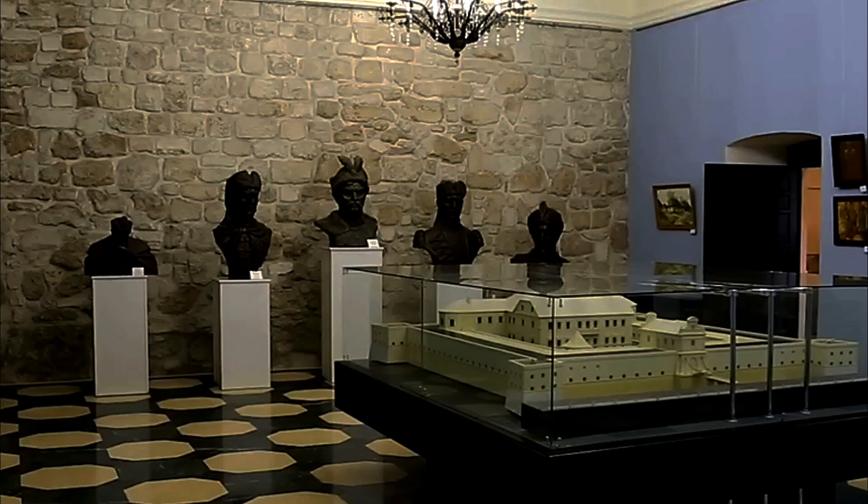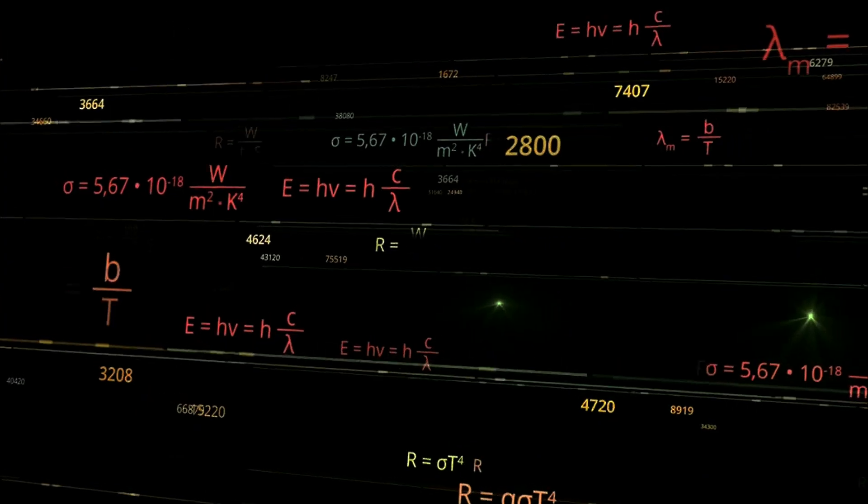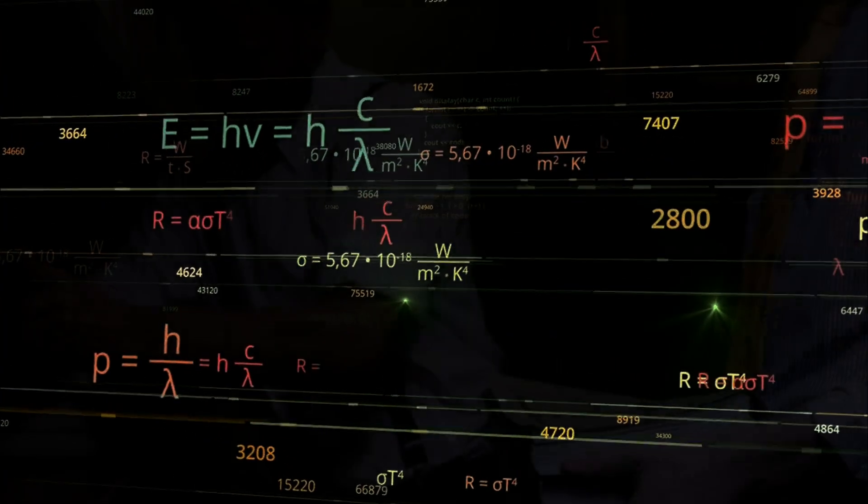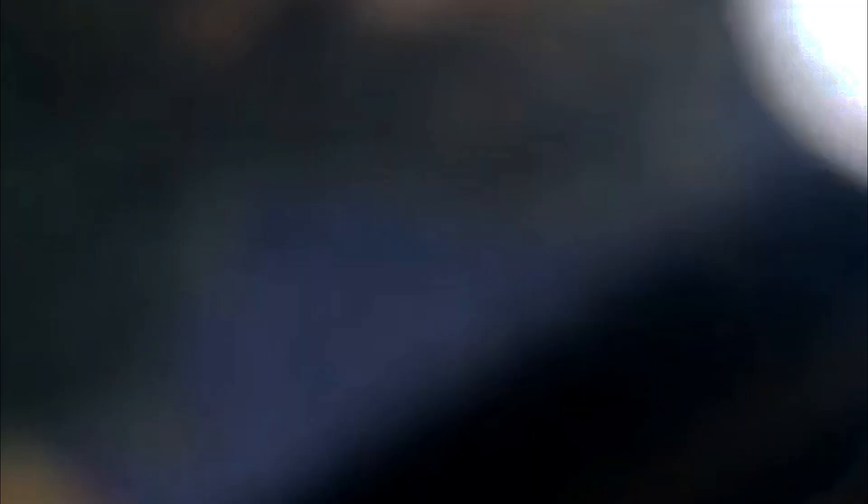Scholars like Ibn al-Haytham made significant contributions during this period. Ibn al-Haytham revolutionized our understanding of light. Al-Biruni contributed to physics, mathematics, and astronomy. Ibn Sina, also known as Avicenna, was a polymath. His theory of motion foreshadowed Newton's first law.